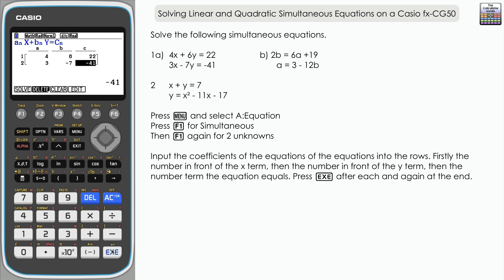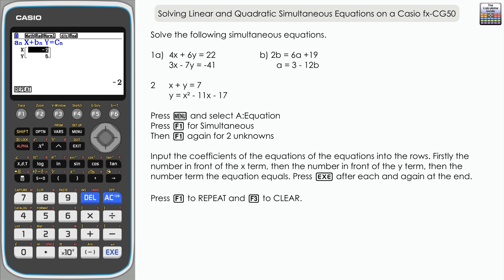Press execute after inputting each value, double-check everything, then press execute one last time to solve. Here you can see our solutions: x equals negative 2 and y equals 5. Now let's get ready to solve part b, the second set of linear simultaneous equations. Press F1 to repeat.